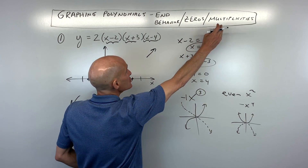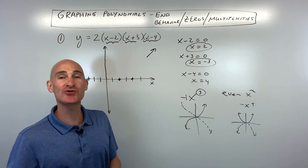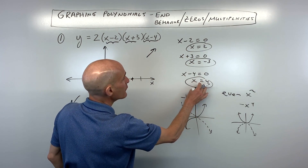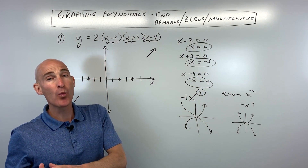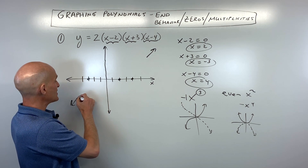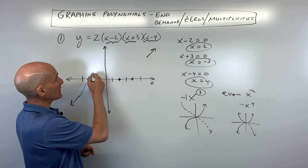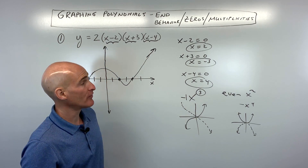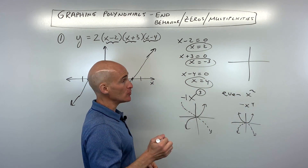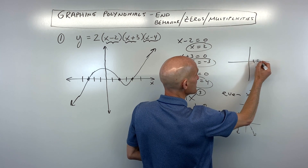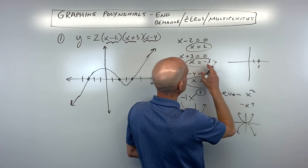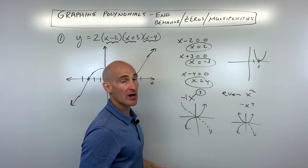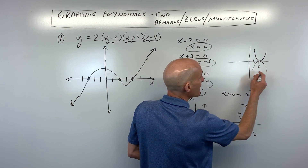The third thing to analyze is multiplicities. Here each factor occurs just once, so at each zero, the graph goes straight through like a line. If a factor occurs twice — a multiplicity of 2 — the graph has a parabola shape at that point and bounces off. It touches the x-axis and turns back around.